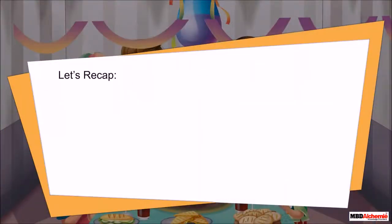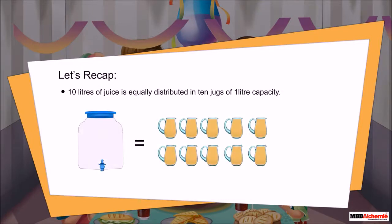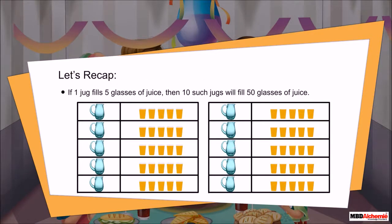Let's recap. 10 liters of juice is equally distributed in 10 jugs of one liter capacity. If one jug fills five glasses of juice, then 10 such jugs will fill 50 glasses of juice.